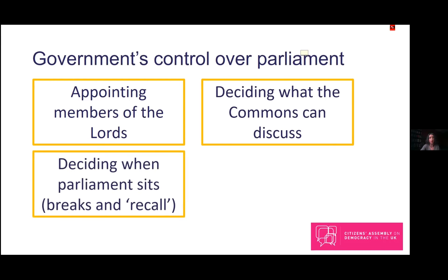The second area where the government has quite a lot of control relates to when the House of Commons sits. It's the government, not MPs, that proposes the dates when the Commons takes breaks from sitting — for example, for Christmas, Easter, and over the summer. Many of you will remember the controversy a couple of years ago when the government sought to prorogue parliament, which is another kind of stopping parliamentary business, and that ended up with an argument in the courts. There's also a flip side: if something happens during a parliamentary break that MPs want to gather to discuss, under current arrangements they rely on government to trigger a so-called recall of parliament, as they don't have the power to do this themselves.